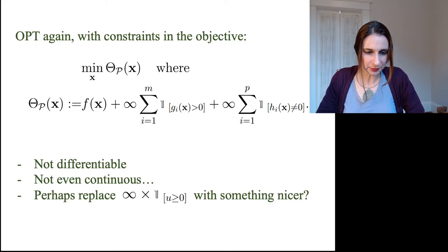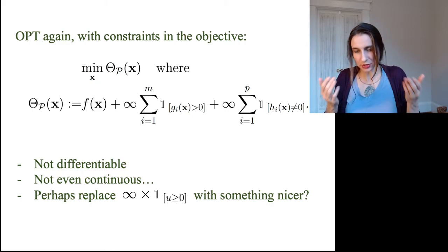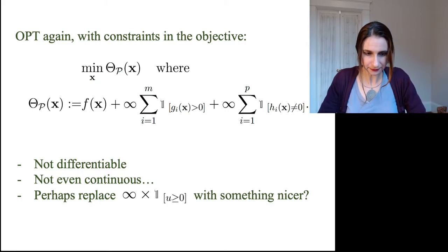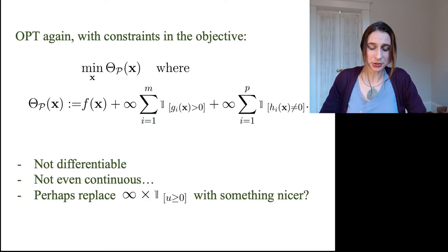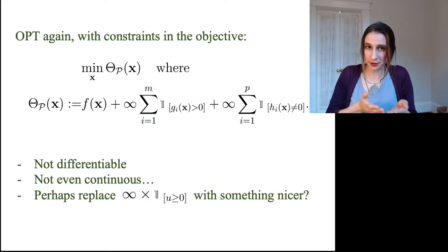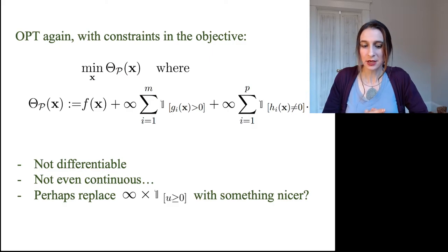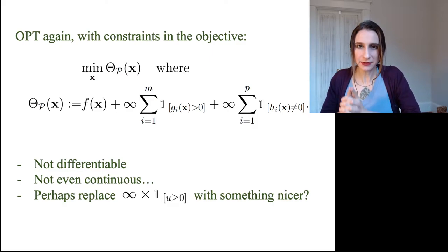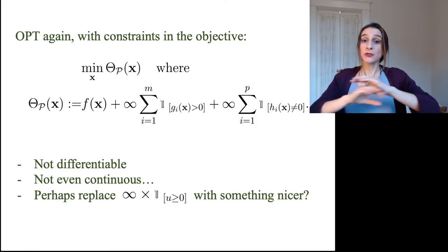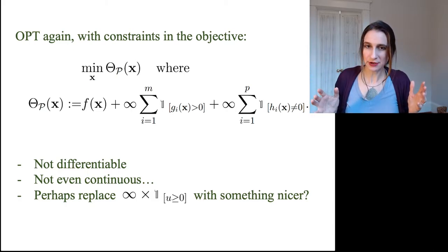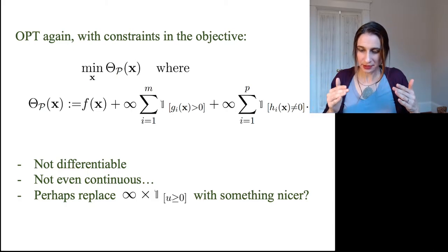So we're going to call it theta p, or it's also going to be called the primal objective. So the primal objective equals f of x, which was the thing we actually want to minimize, plus infinity times 1 if any of the g constraints are violated, and then plus infinity if any of the h constraints are violated. So if any of the g or h constraints are violated, this thing is infinity.